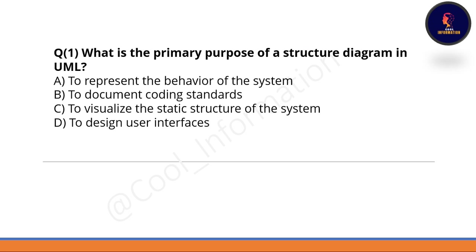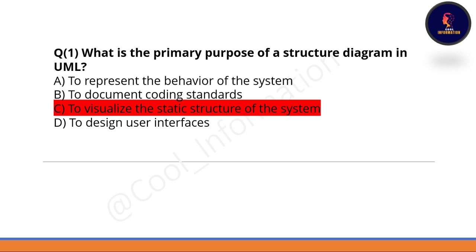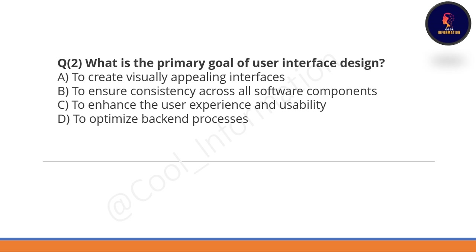First question: what is the primary purpose of a structure diagram in UML? Option A: to represent the behavior of a system. Option B: to document coding standards. Option C: to visualize the static structure of the system. Option D: to design user interface. Option C is correct — the primary purpose of a structure diagram in UML is to visualize the static structure of the system.